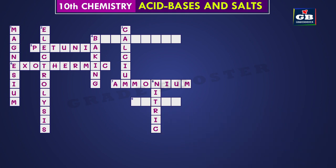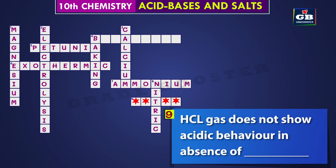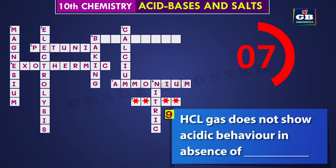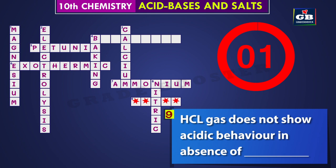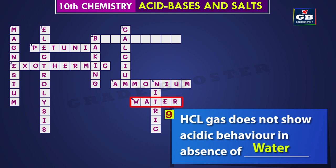Let's see the next one — nine across. HCl gas does not show acidic behavior in the absence of dash. The answer is water. HCl gas does not show acidic behavior in the absence of water.